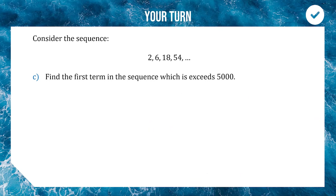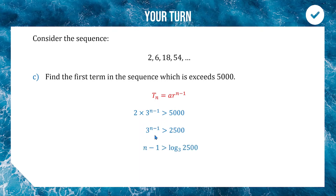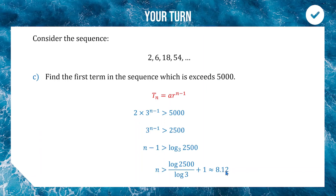For part c, we're finding which term in the sequence is greater than 5000. Using the nth term formula, we set 2 times 3 to the power of n minus 1 greater than 5000, divide by 2, take log base 3 of both sides. The right hand side becomes log base 3 of 2500 — using the change of base formula and adding 1, we get approximately 8.12. Because we want to exceed 5000 we round up, not down, so it is the 9th term that is the first term bigger than 5000.